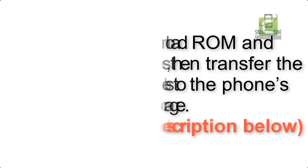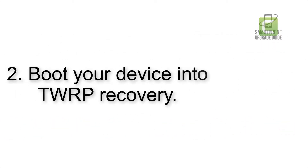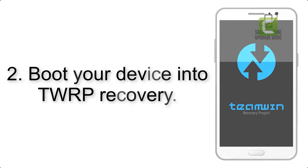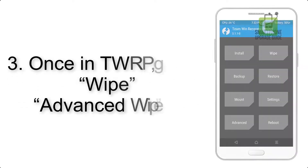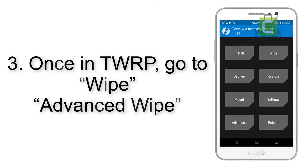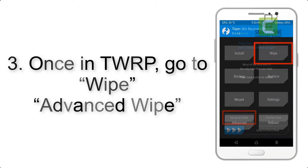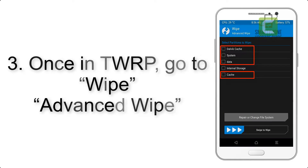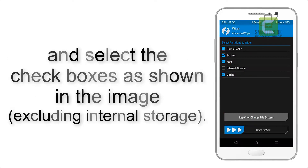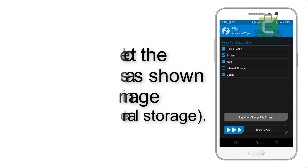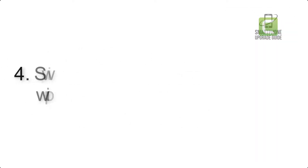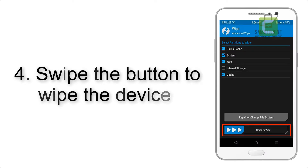Step 2: boot your device into TWRP recovery. Once in TWRP, click on Wipe, then Advanced Wipe, and select the checkboxes as shown in the image, excluding internal storage. Step 4: swipe the button to wipe the device.